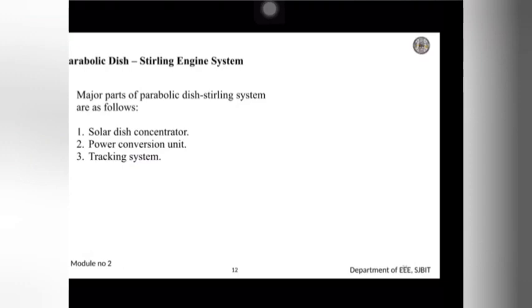The last part is the tracking system. The parabolic dish system uses a computer to track the sun and concentrate the sun rays onto the receiver located at a focal point in front of the dish. Since we are using a parabolic dish, it is a focal point, not a focal line. The heat engine, such as a Stirling engine, is linked to the receiver to generate electricity, or we can make use of the water or air for space heating. We can obtain a temperature of 1000 degrees Celsius here, which has a high efficiency of conversion from solar energy to electrical energy.